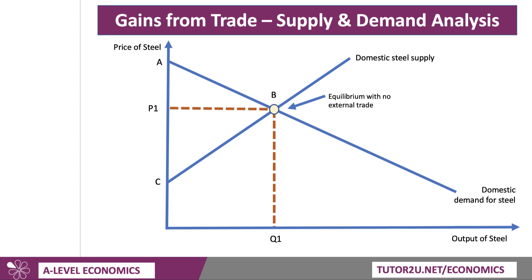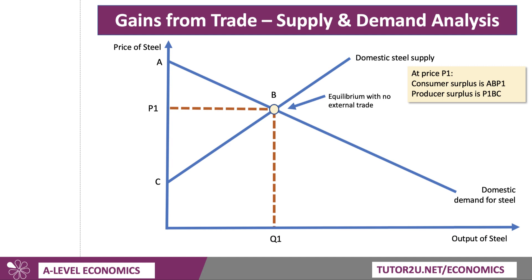Now, in a macro exam, don't forget — don't shade your diagrams. Please label. It looks so much neater for the exam. So there's our equilibrium. At price P1, consumer surplus is ABP1. Producer surplus is P1BC.